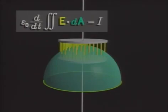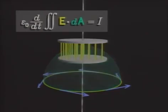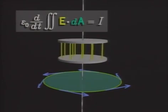In other words, epsilon-naught times the rate of change of electric flux through the dome-shaped membrane is the same as the electric current through the flat membrane.